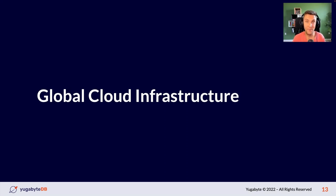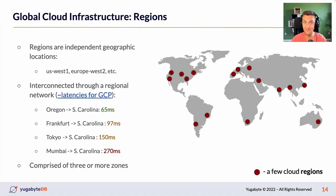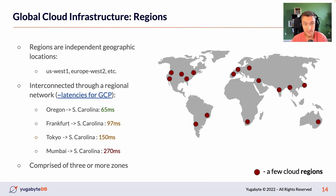We certainly can make the application perform fast around the world regardless of the user location. Before we start looking into specific design patterns, let's remind ourselves about the global cloud infrastructure. As you know, global cloud infrastructure consists of regions. Every cloud provider has around 70 or 80 plus regions around the world — they are in Europe, in Asia, in Australia, in South America. All those regions are interconnected through a regional network, which is pretty fast. But the round-trip latency time between those regions will vary.